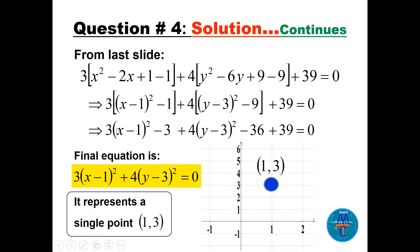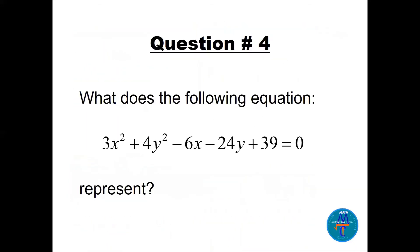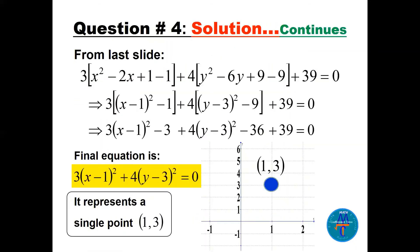Continuing: inside the x bracket we get (x−1)² minus 1; for y, (y−3)² is the perfect square. Multiply back: 3×(−1) = −3 and 4×9 = 36 is offset by −36. Combining with 39 gives 3(x−1)² + 4(y−3)² = 0. If the right side were 1 this would be an ellipse, but it equals zero. This means it is a degenerate or 'false' ellipse — the graph is only the single point (1, 3).